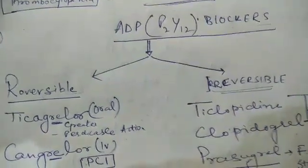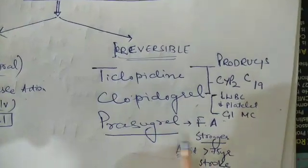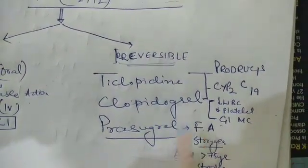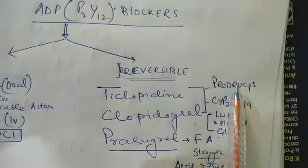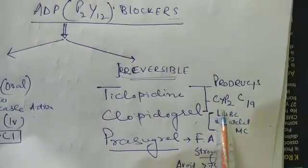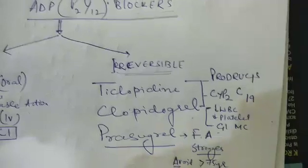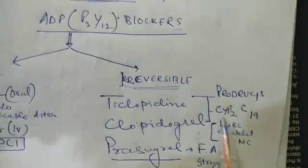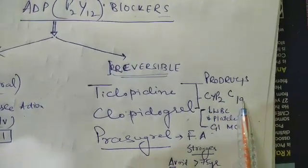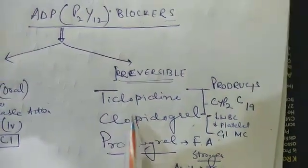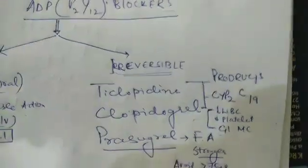In the irreversible blocker, we have three drugs - ticlopidine, clopidogrel, and prasugrel. These are the irreversible ADP receptor blockers. Ticlopidine and clopidogrel are prodrugs. They go to the liver where they are metabolized by the enzyme cytochrome P2C19 and are converted to active metabolites. You have to remember here that PPIs block or inhibit this enzyme, and as a result of which, when PPI is given, ticlopidine and clopidogrel cannot be converted into active metabolites and their antiplatelet action remains at the lower side.